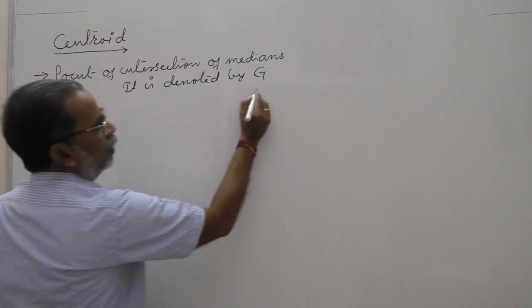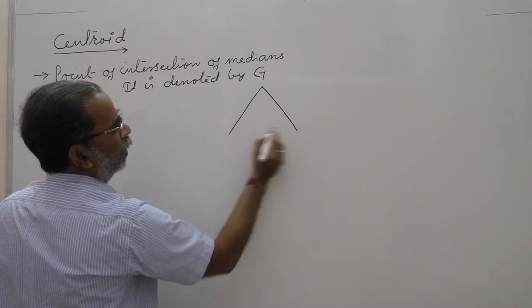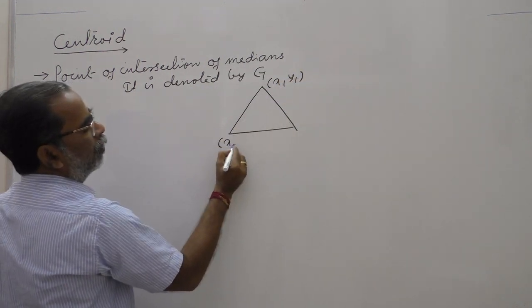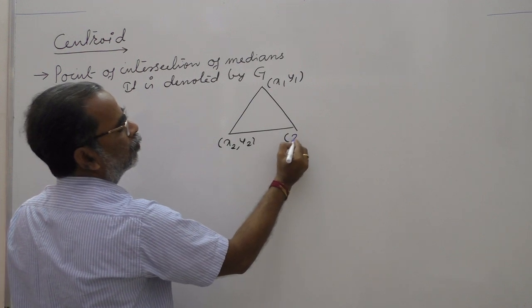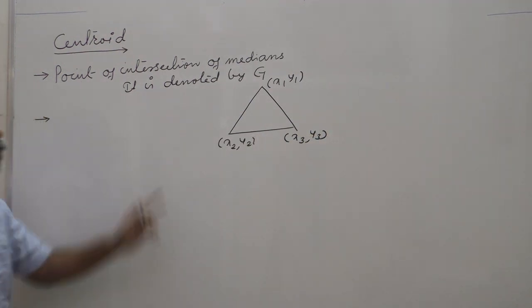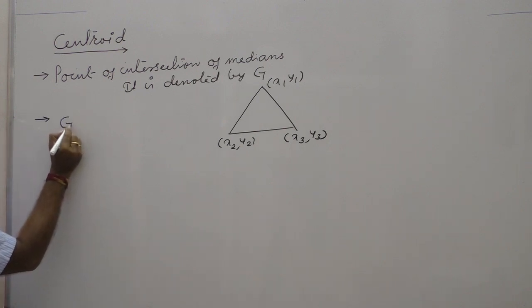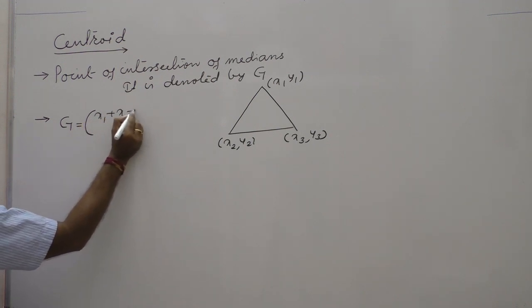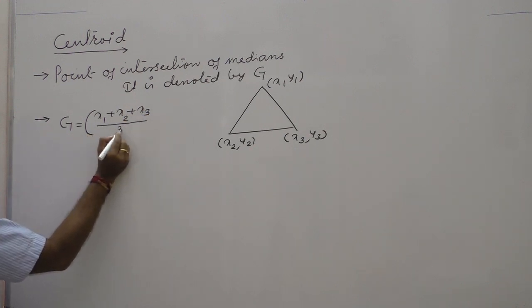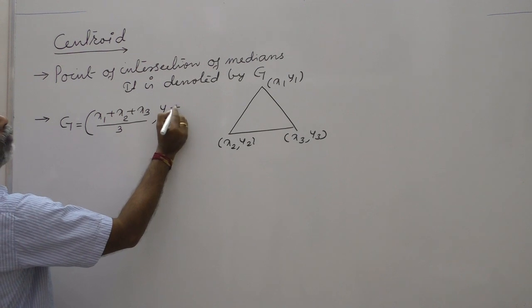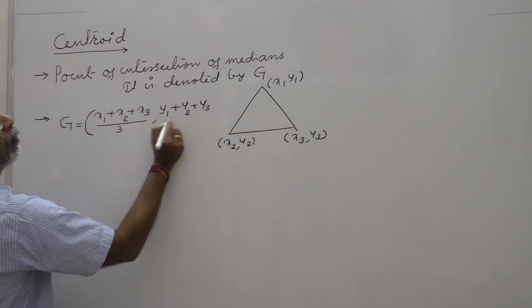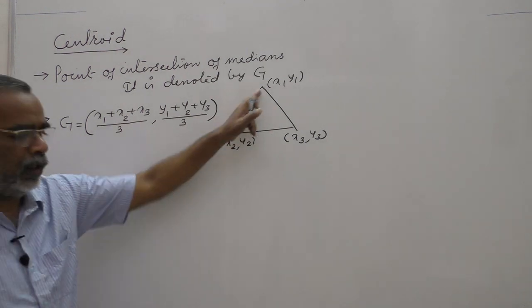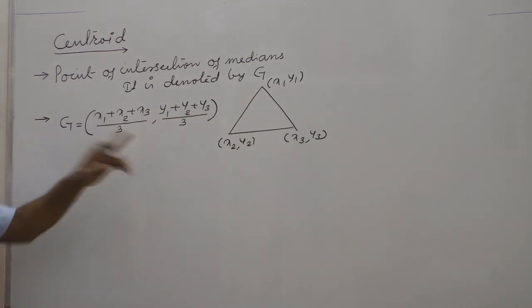If a triangle has vertices (x₁, y₁), (x₂, y₂), and (x₃, y₃), then the centroid G is calculated as: G = ((x₁ + x₂ + x₃)/3, (y₁ + y₂ + y₃)/3). This is the centroid of the triangle formed by three given points.